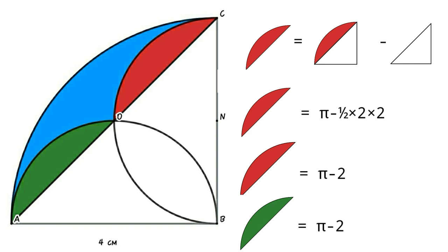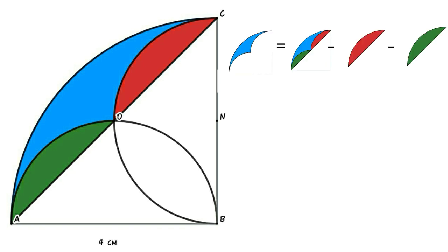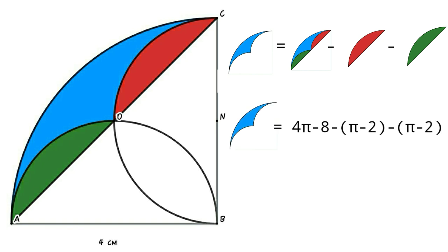So area of blue region equals area of segment AUC minus area of red segment minus area of green segment, which equals (4π − 8) − (π − 2) − (π − 2) = 2π − 4 cm².